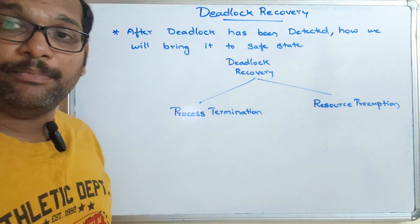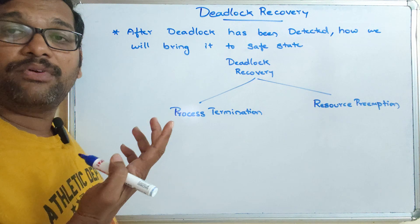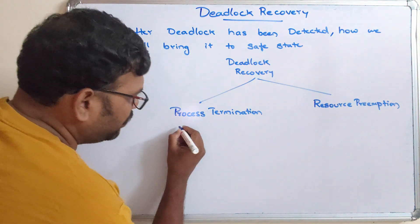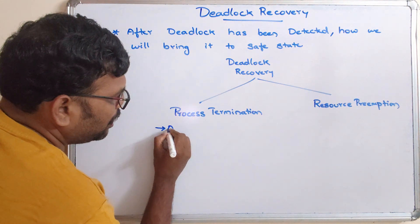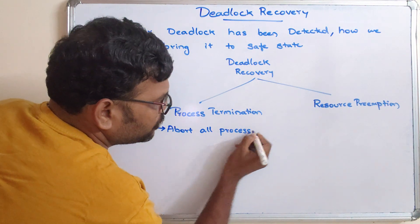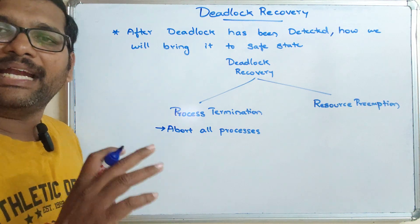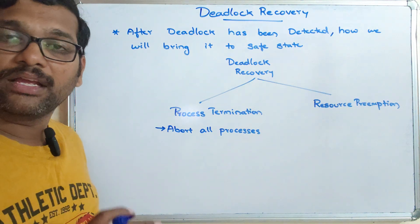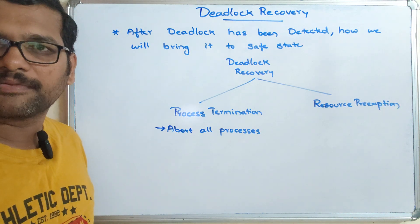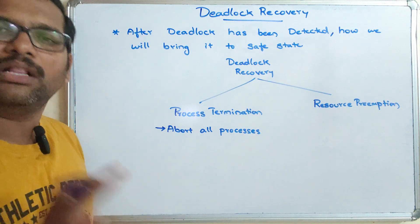Process termination can be done in two ways. The first approach is to terminate all processes — simply remove every process without question. The processes are killed, that means terminated. Obviously, with no processes running, there will be no deadlock.